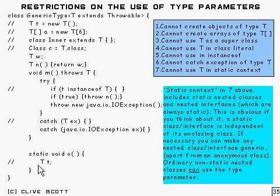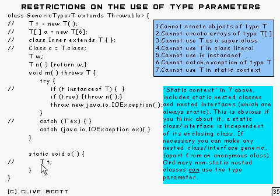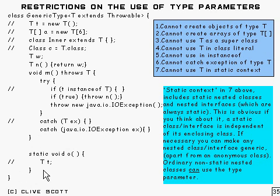A final thing you can't do is use type T in a static context. You can't have a static method using T, a static variable of type T, or a static initializer — none of those are allowed. Basically, static context can only refer to static information. There may be no parameterized types at all in the system when it's being called, so there's no way to deal with it.